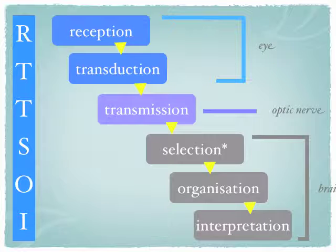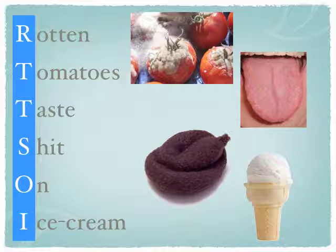You need to remember the order: R-T-T-S-O-I. When I asked one of my Year 12s to come up with a phrase to help remember the order, Brenton came up in five seconds with 'rotten tomatoes taste shit on ice cream.' Obviously you can make up your own phrase, but that one seemed fairly memorable for my other students.